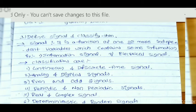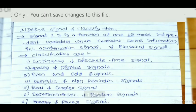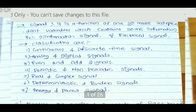Now we are going to see the classification of signals. First: continuous and discrete time signals. Second: analog and digital signals. Third: even and odd signals. Fourth: periodic and non-periodic signals. Fifth: real and complex signals. Sixth: deterministic and random signals. Seventh: energy and power signals.